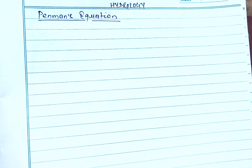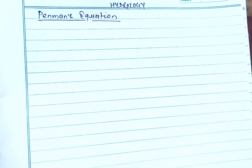Hello everyone, welcome to our channel. In this lecture we are going to talk about the Penman's equation — the formula portion and the numerical portion after deriving the formula. The Penman equation in hydrology is widely used to estimate evaporation and evapotranspiration, which are the most important components of the water cycle. The Penman formula is a semi-empirical equation combining mass transfer and energy budget methods, developed by Penman in 1948 and still widely used for calculation of potential evapotranspiration using various meteorological data.